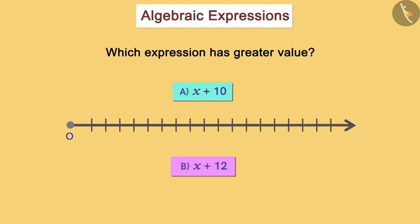Let's represent the sum of x and 10 on the number line. Let us assume that variable x is positioned here on the number line. Therefore, x + 10 will be positioned 10 units ahead of x. Let's represent x + 10 with the letter P.